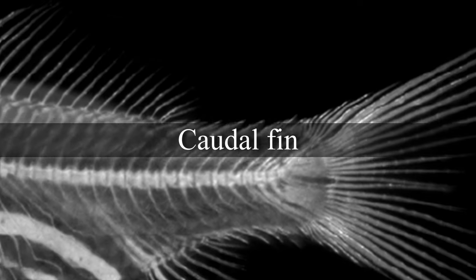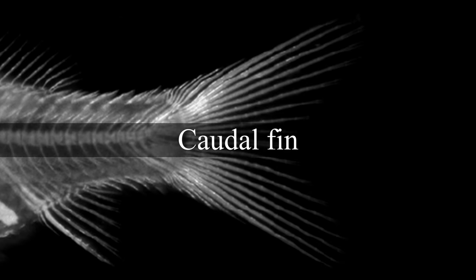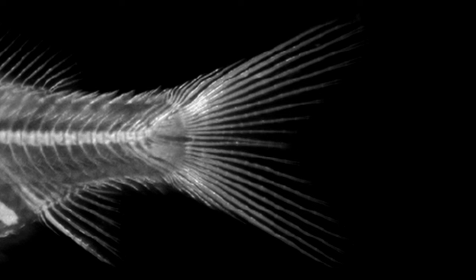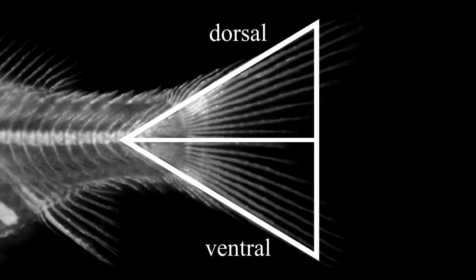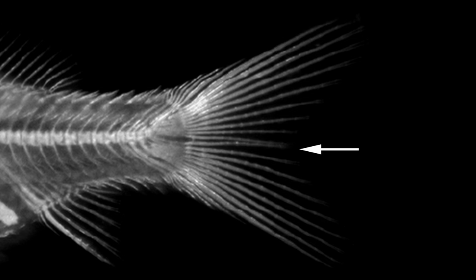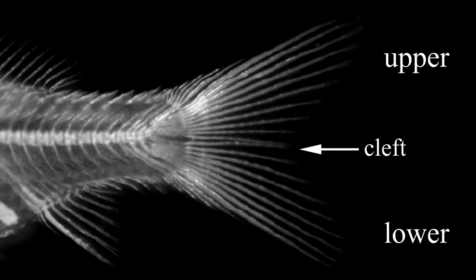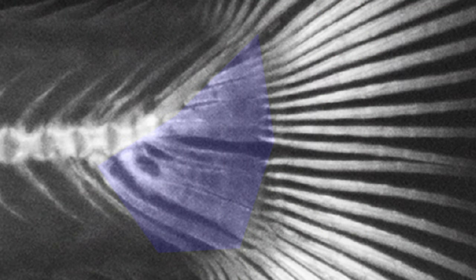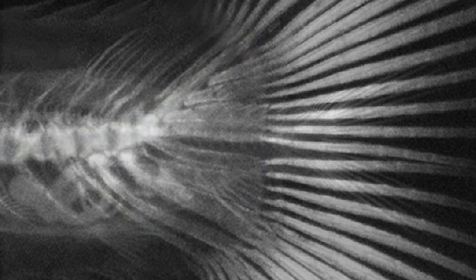Let's move on to the caudal fin — a quite important feature of goldfish morphology. From a lateral view, the caudal fin outline is dorsoventrally symmetric, a shape commonly seen in other teleost species. This symmetric shape is characterized by a cleft which allows us to distinguish the upper and lower fin lobes. The fin rays are attached to the caudal fin skeleton, which is in turn attached to the notochord, so the caudal fin skeleton can be recognized as part of the axial skeleton.